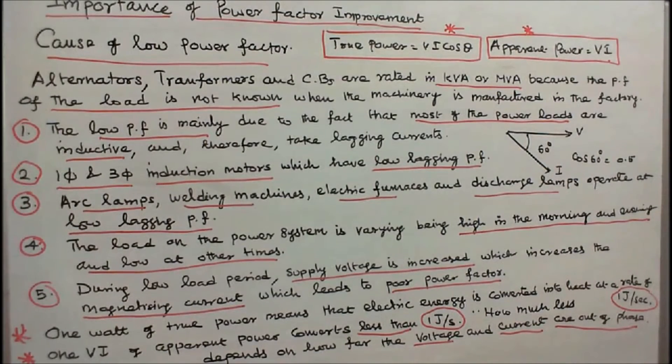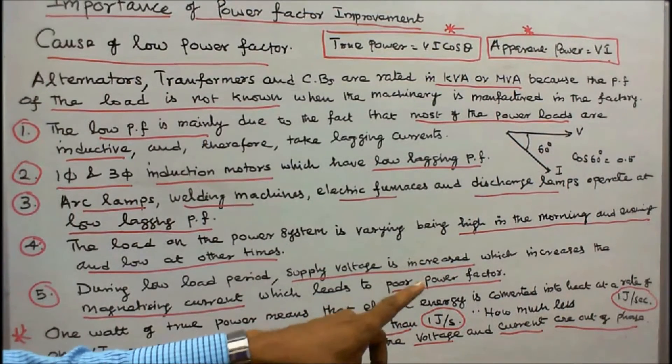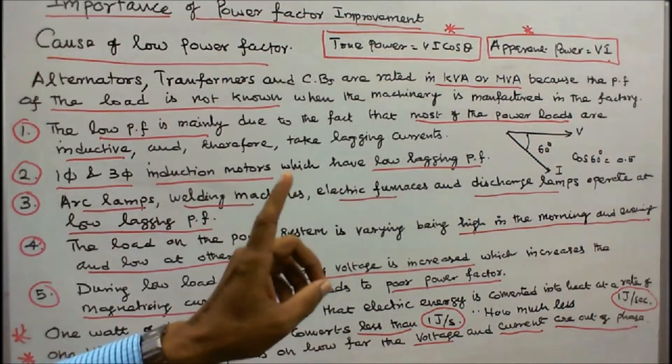We know that true power is equal to VI cos θ. One watt of true power means that electric energy is converted into heat at a rate of 1 joule per second.